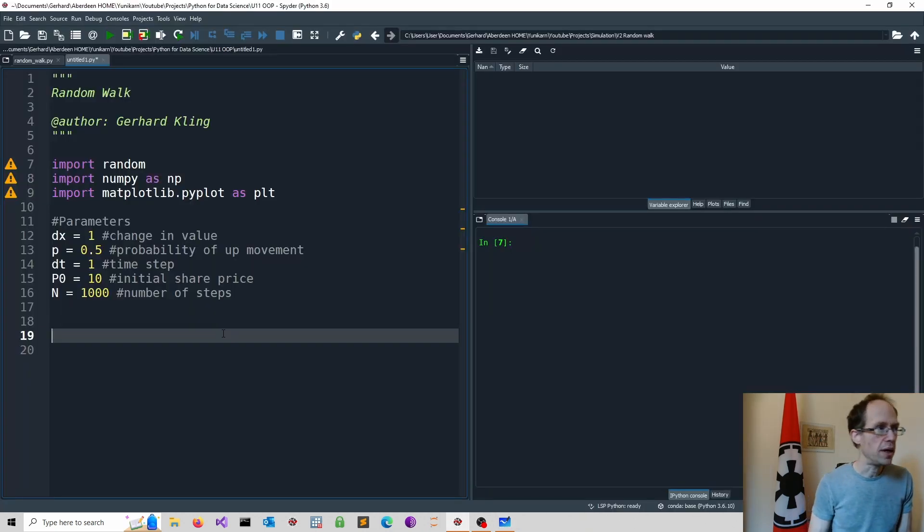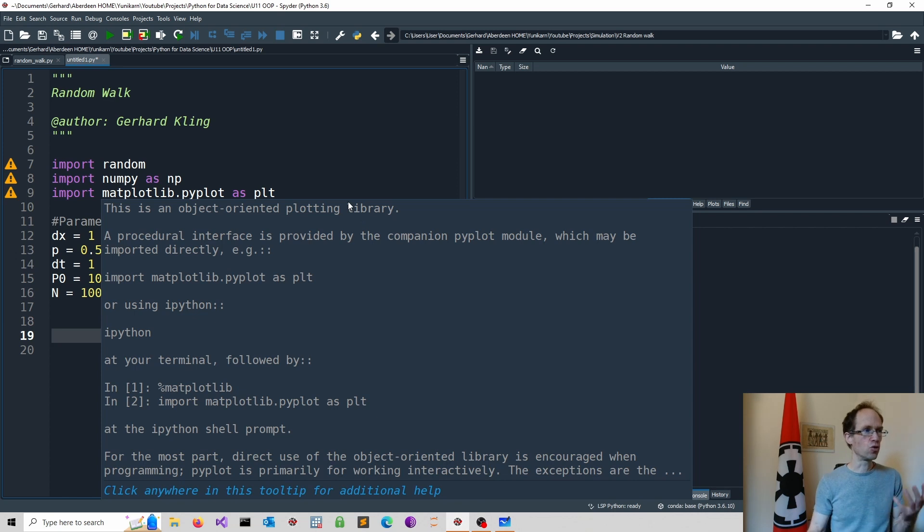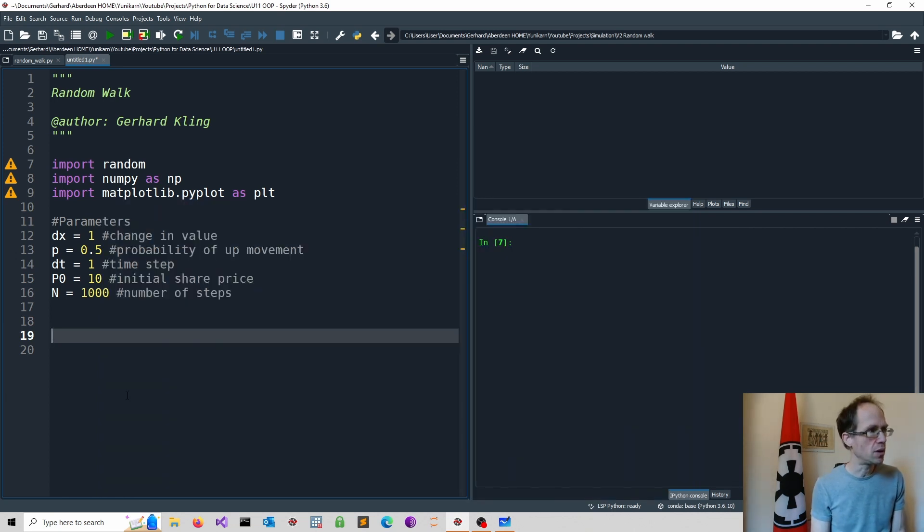So I start by importing our standard libraries. We certainly need the random library because we have to do some random draws. NumPy is useful because we have to store our information and a NumPy array seems to be a very reasonable choice. So the first thing I always tend to do is I just specify the parameters of my problem, which of course I can modify going forward. So here I just specify dx, so this is the change in value or the change in space in a more general sense. And then we have a probability for an up movement. So here we argue we have an equal probability, but of course you might like to modify this. Then we have a time step, I just put this equal to 1, and we have an initial value. Again this is entirely arbitrary.